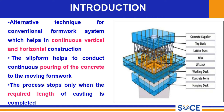The movement is facilitated by hydraulic jacks and jack rods. In the construction of vertical structures, the rate of raising the formwork upward will almost be in the weight of 200–300 mm per hour. Slip form construction is an alternative technique for the conventional formwork system which helps in continuous vertical and horizontal construction. The slip form helps to conduct continuous pouring of concrete to the moving formwork, and the process only stops when the required length of casting is completed.